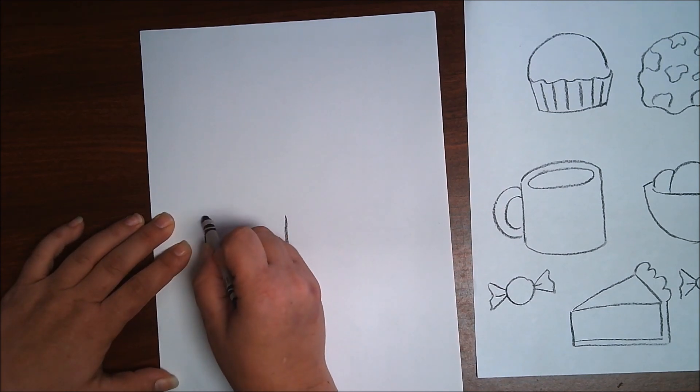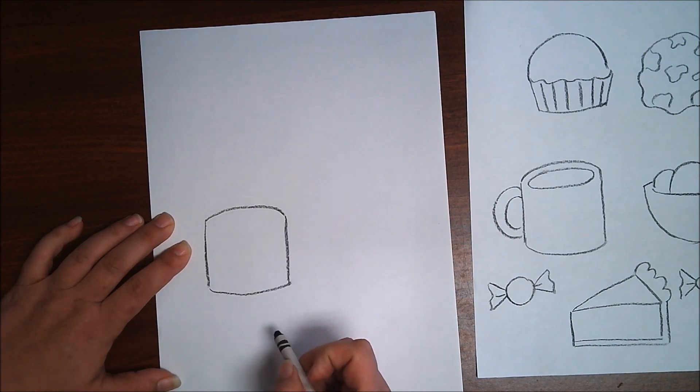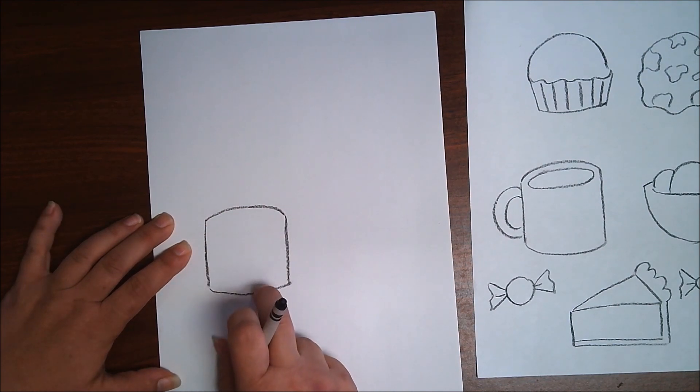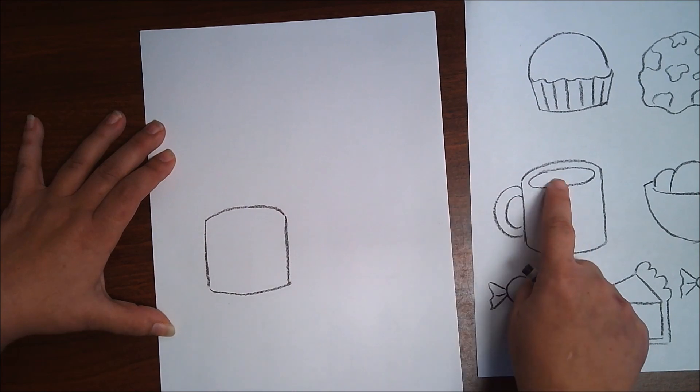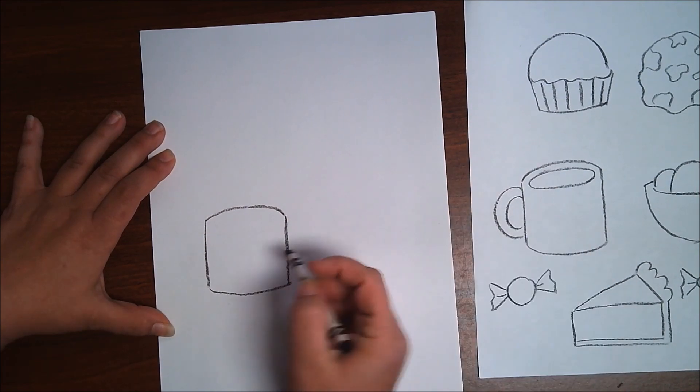And if you're not great at curves yet don't worry about it because what we're going to do is this kind of looks like a marshmallow if you're good at your curves but if you just did straight lines that's fine. We're going to draw an oval on the inside of here so that we can see our liquid. So we're going to draw that oval.